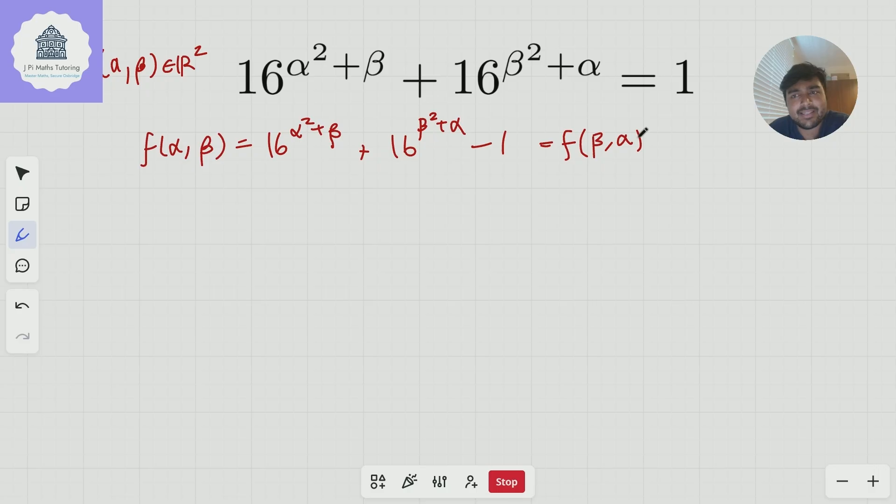Now, why is this interesting? Well, this just basically means that if I have a solution (α,β), then I can swap the roles of beta and alpha, and that will give me another solution. So this would suggest that the number of solutions are even. But one thing we've got to be careful of is what if alpha and beta are the same? If I swap them, I get the same solution, so it's not really a new solution.